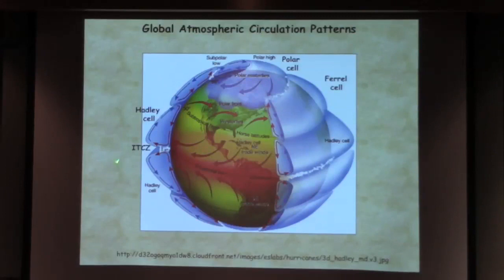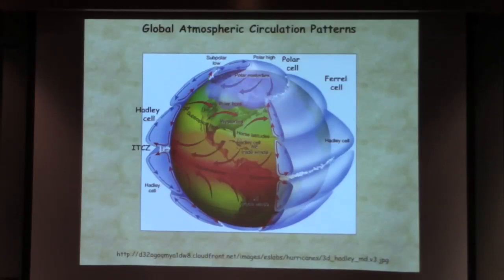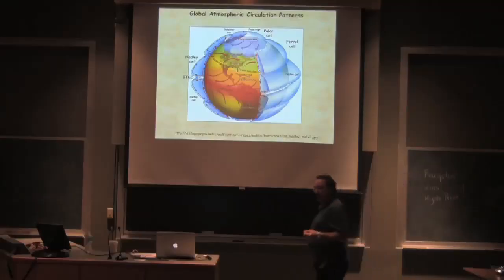You wind up with air sinking around 30 degrees north and 30 degrees south. Then the air flows back near the surface towards the equator, picking up water vapor again if it's flowing across the ocean. The air flowing at 30 degrees northward is also picking up water vapor, and when it gets up to about 60 degrees, it's accumulated enough water vapor that it rises, giving you another low-pressure system — your North Pacific low — along with the ITCZ and the desert belt.